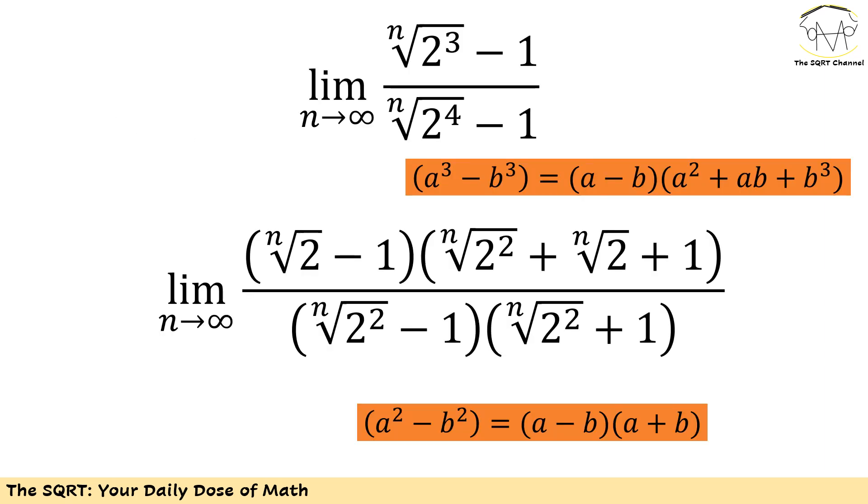Let's take a look at the numerator. I have the nth root of 2 to the power of 3 minus 1 to the power of 3. I can rewrite it as the nth root of 2 minus 1 times the nth root of 4 plus the nth root of 2 plus 1. This is based on the fact that a³ minus b³ can be expanded as (a - b)(a² + b² + ab).